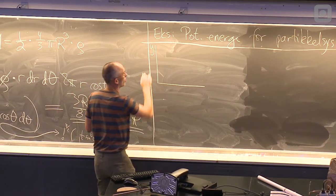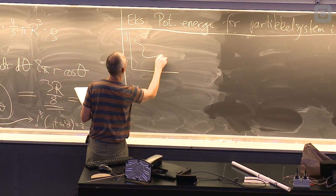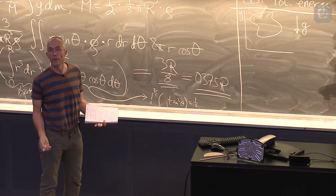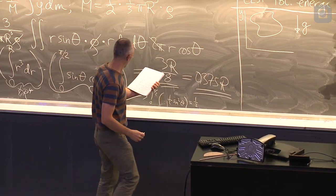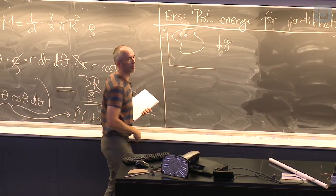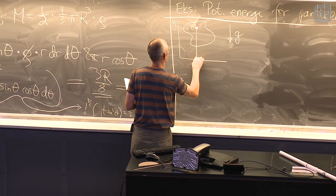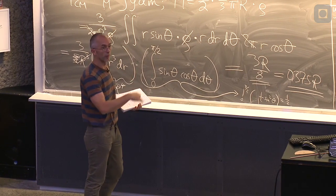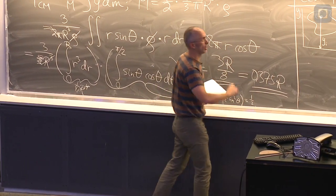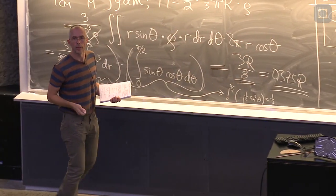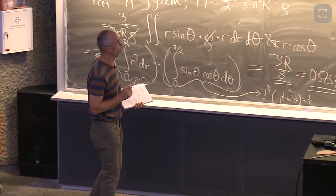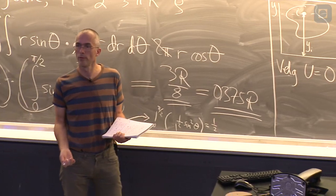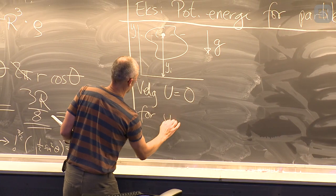Det ser sånn ut. Vi har begynt å bruke y-aksen oppover her, så la oss fortsette med det. Her har vi partikkelsystemet. Det befinner seg i tyngdefeltet. Konstant g da. La oss ikke gjøre det vanskeligere enn nødvendig. Her har vi en partikkel. Vi har mange, men dette er en av dem. Den er nummer i. Den befinner seg i posisjonen y i, som er den interessante i forhold til potensiell energi. Det spiller ingen rolle hvor vi er i horisontal retningen. Hvis vi er på en viss høyde her, så har alle partikler i den høyden samme potensielle energi, hvis massen er like stor da. Ja, og så har vi bestandig muligheten til å velge null potensielle energi, der vi måtte ønske. For eksempel ved y lik null.